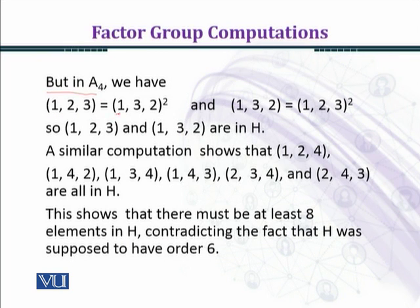But in A4, we have (1, 2, 3) into (1, 2, 3) equal to (1, 3, 2). And (1, 3, 2) squared equal to (1, 2, 3). You can very easily verify that (1, 2, 3) permutation multiplied by (1, 2, 3) gives (1, 3, 2), and (1, 3, 2) multiplied by (1, 3, 2) gives (1, 2, 3). So (1, 2, 3) and (1, 3, 2) are in H. These two permutations must be present in H.